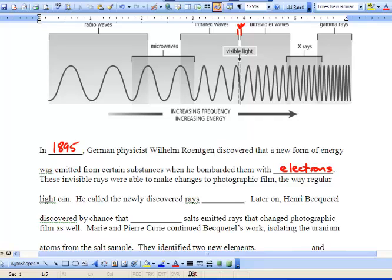These invisible rays were able to make changes to photographic film the way regular light can. He called the newly discovered rays X-rays.